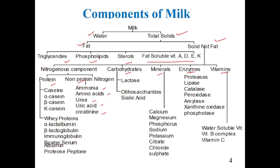The major proteins present in milk are caseins and whey proteins. Whey proteins include alpha-lactalbumin, beta-lactoglobulin, immunoglobulin, bovine serum albumin, and proteose peptone. Under carbohydrates we have lactose, oligosaccharides, and sialic acid.